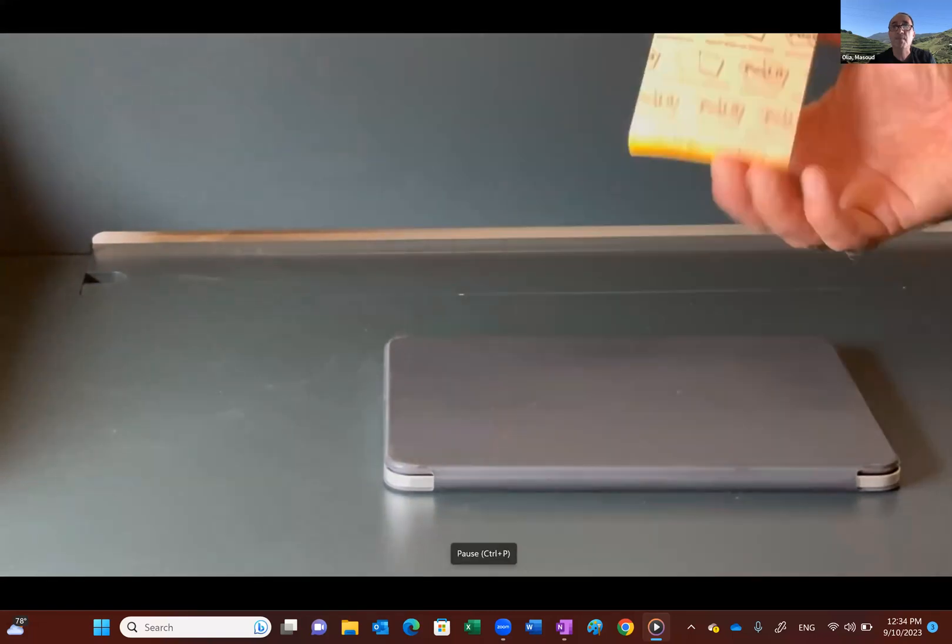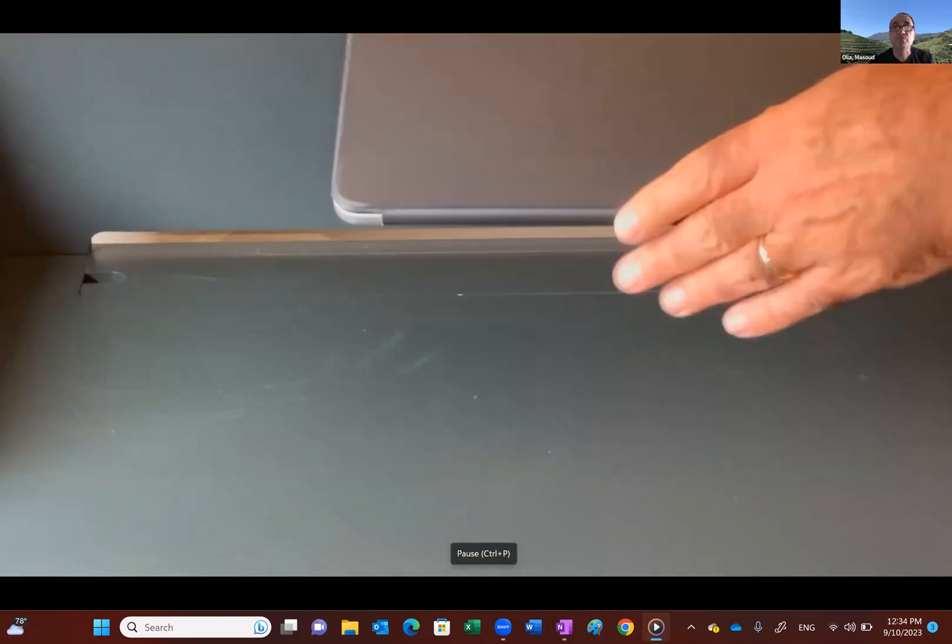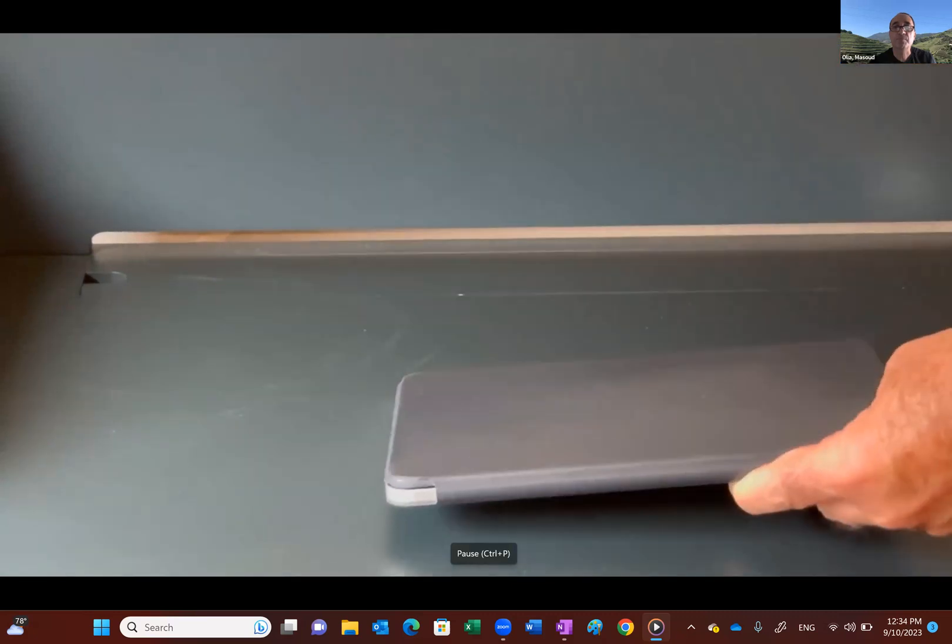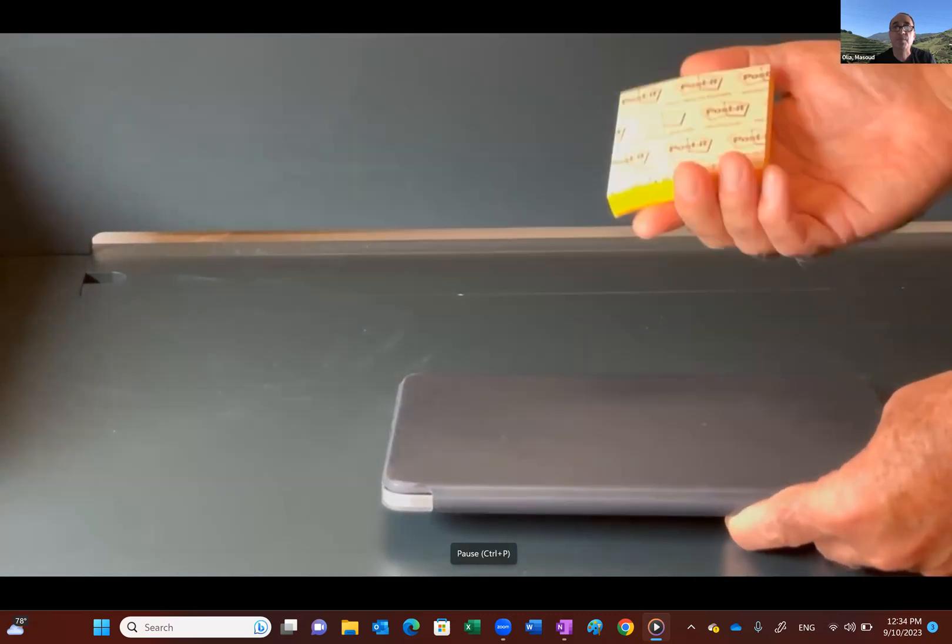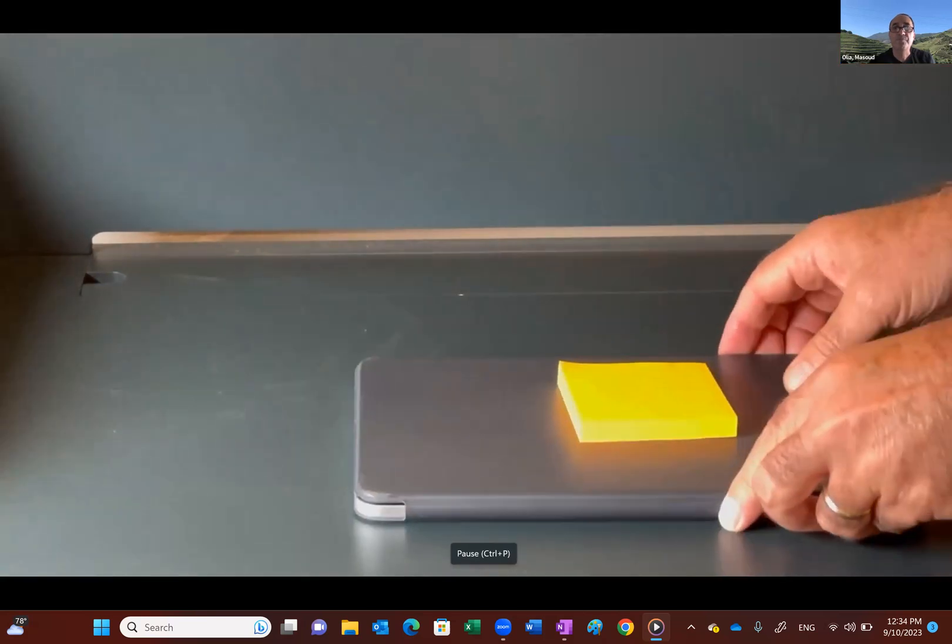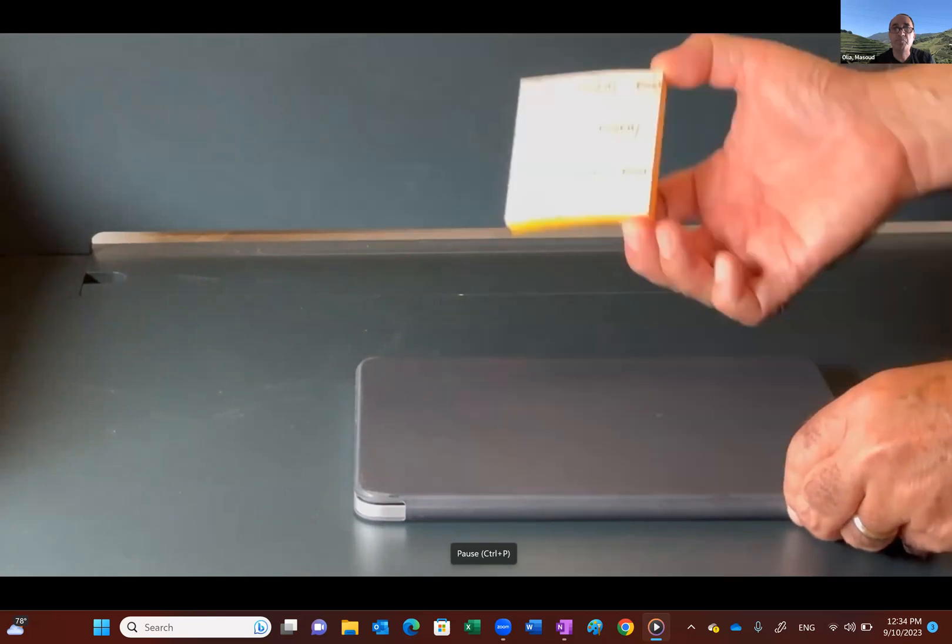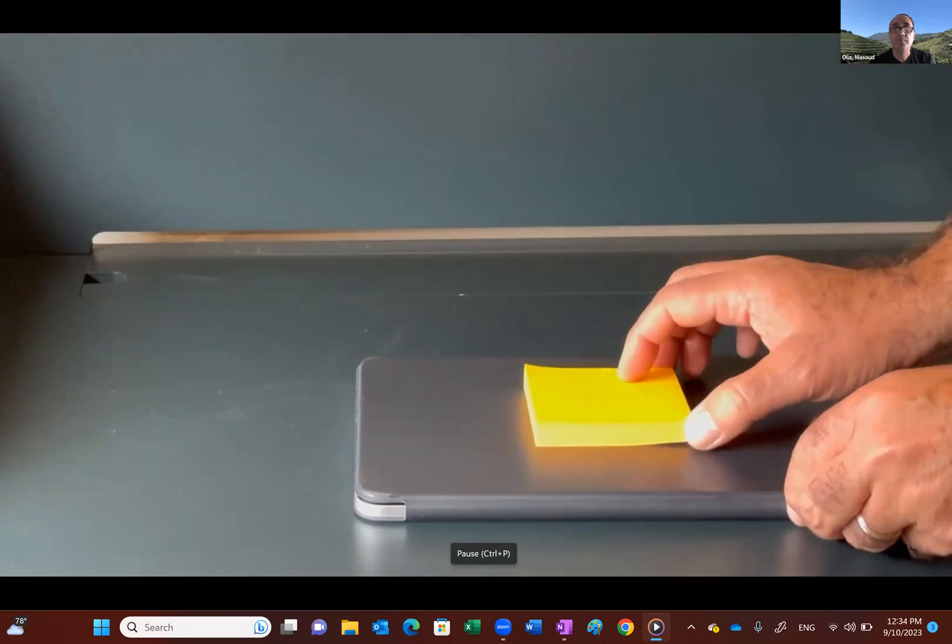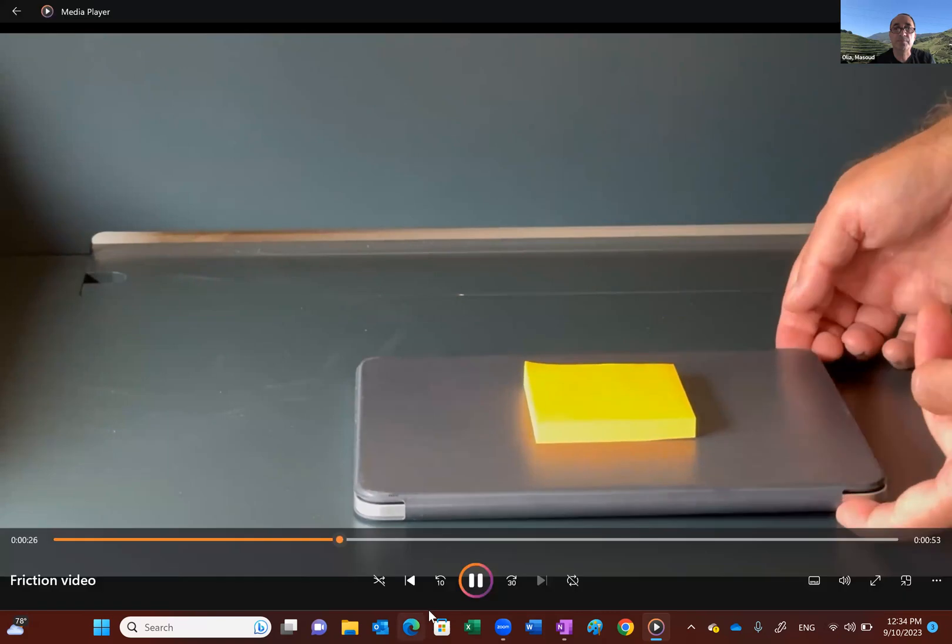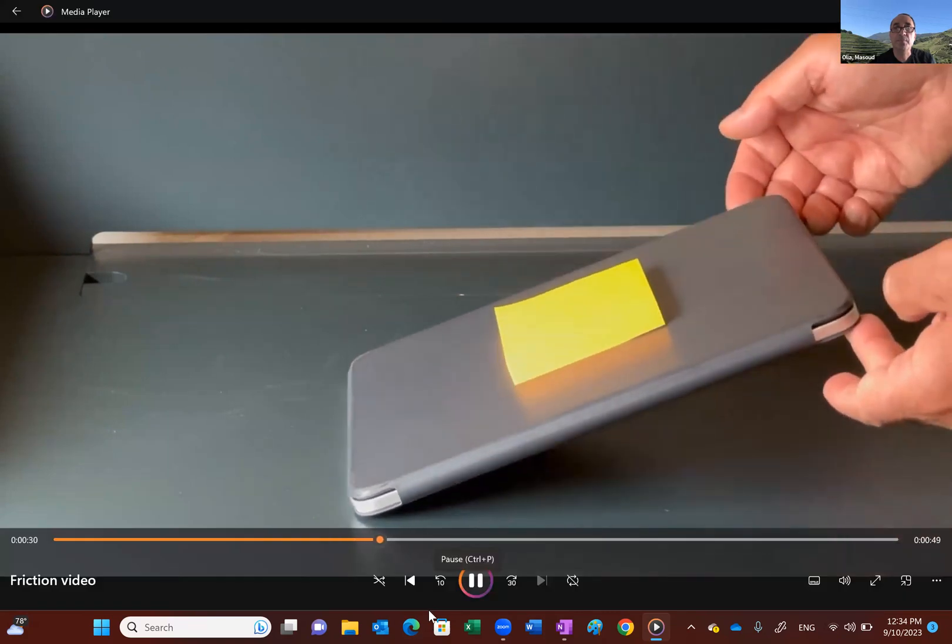So let's say I would like to know the coefficient of static friction between this iPad cover and anything else. I just use this sticky pad here. So it's a very simple experiment that you could do. You put these two surfaces, one on top of the other, and then you raise this as soon as the motion is initiated.